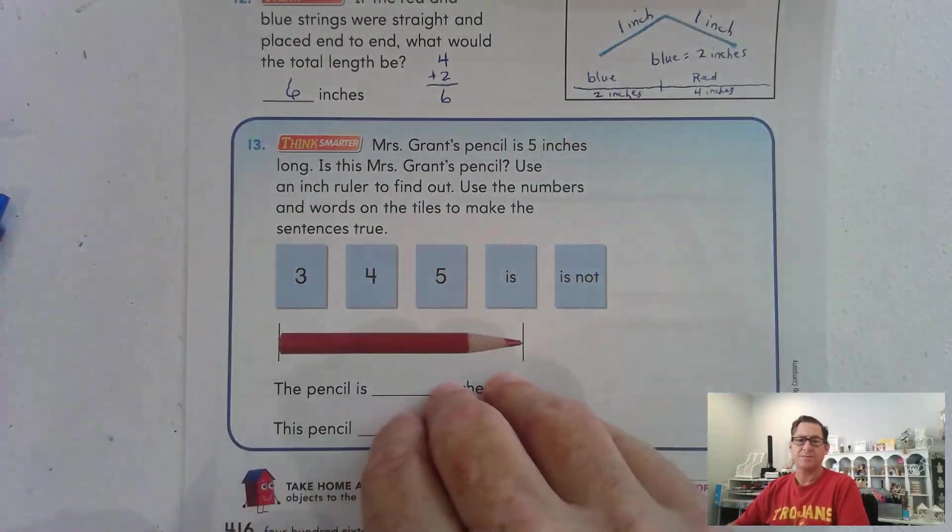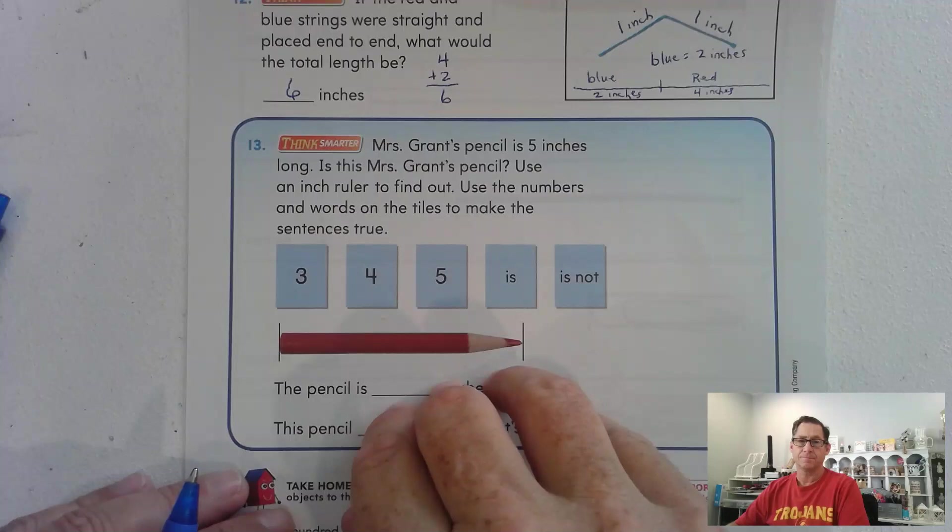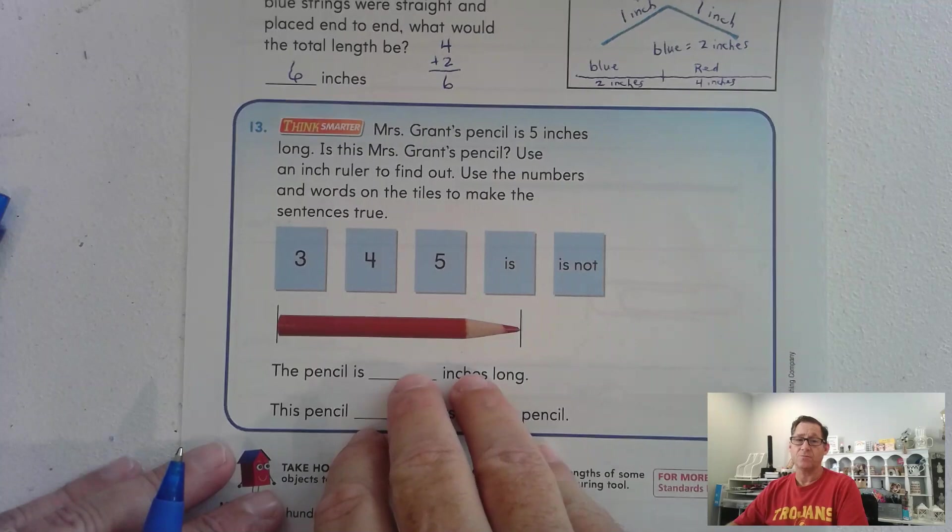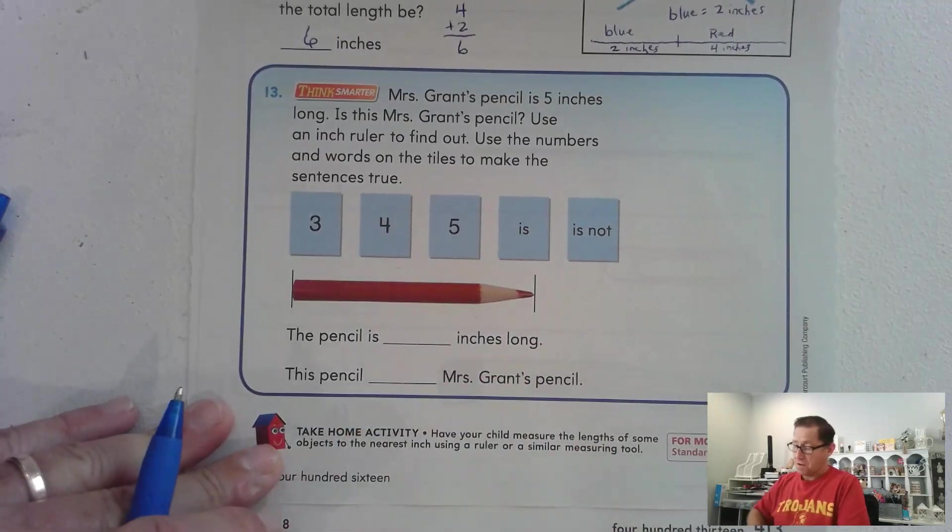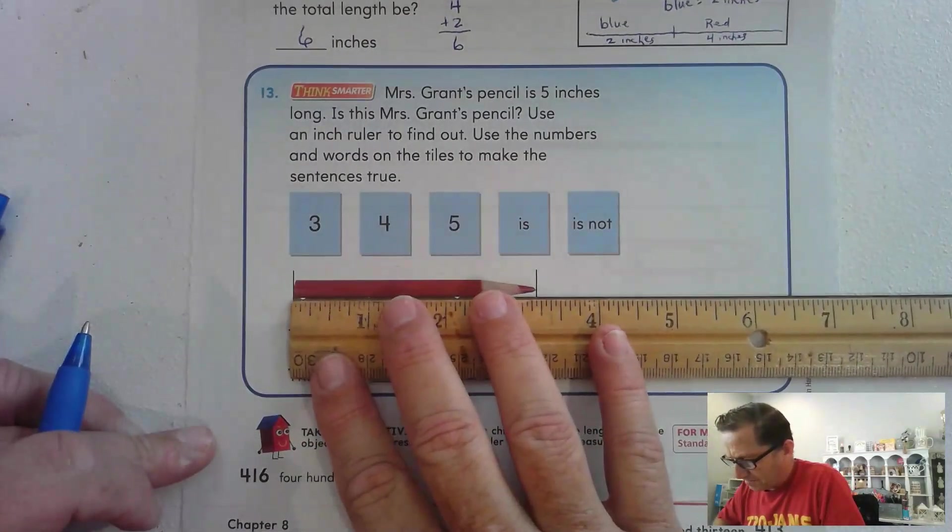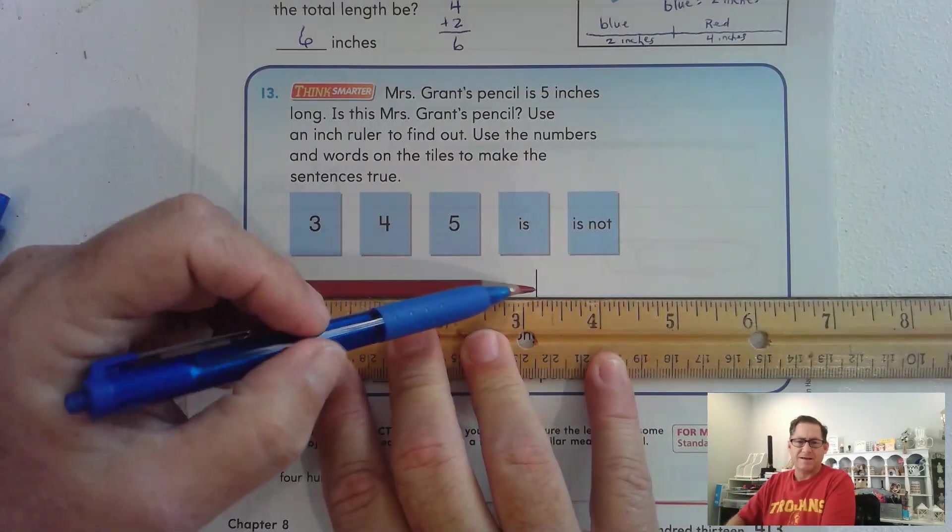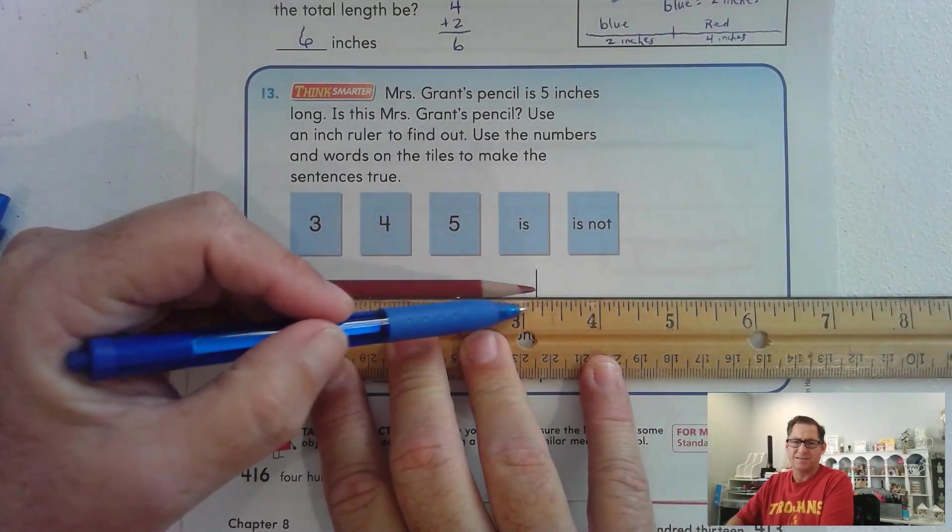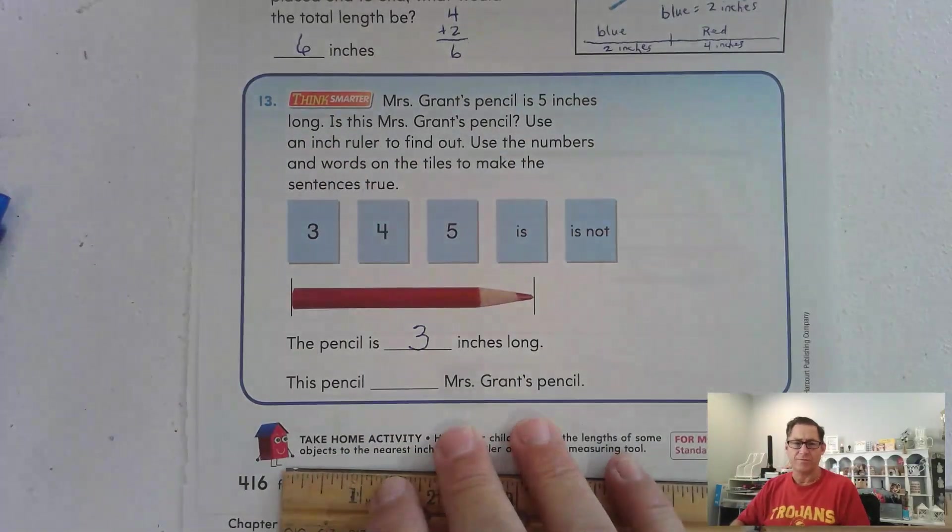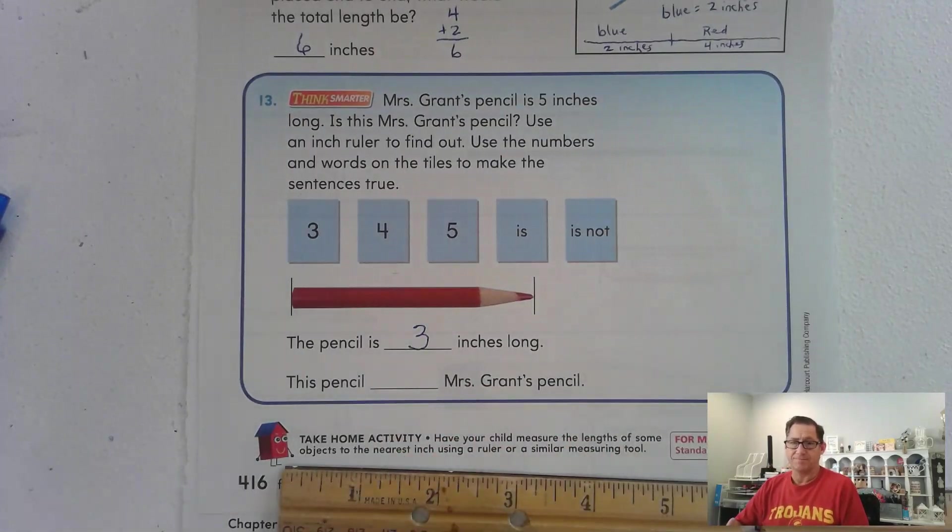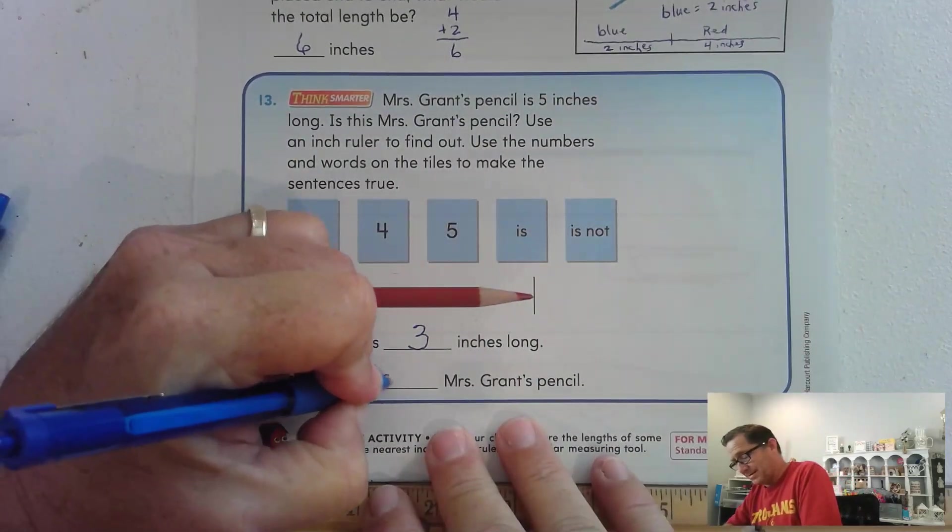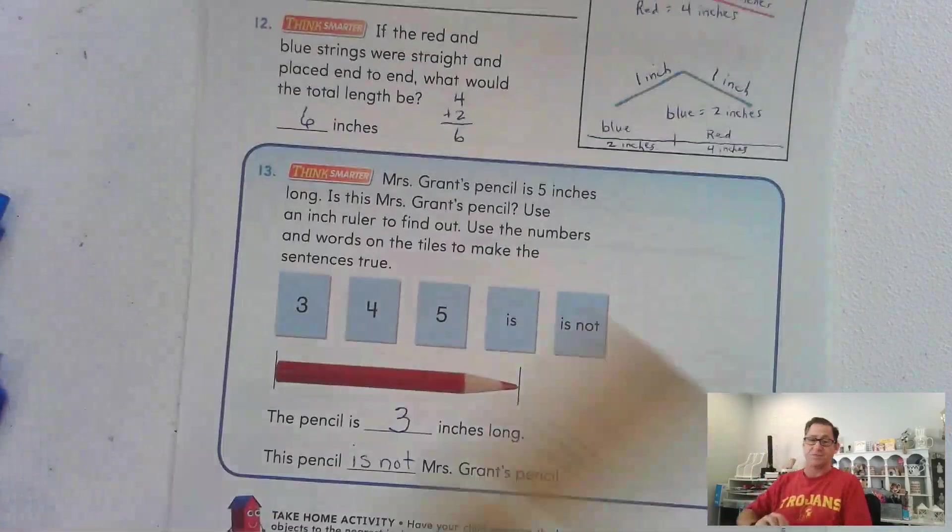And 13. Mrs. Grant's pencil is five inches long. Is this Mrs. Grant's pencil? Use an inch ruler to find out. Use the numbers and words on the tiles to make the sentences true. It doesn't look like five inches to me, but let's just check. Yeah, no, it's not five, right? It's close to three inches. So the pencil is, we're going to say three inches long. It's a little over three inches. This pencil is or isn't. Mrs. Grant's was five inches. This one's three inches. So this pencil is not Mrs. Grant's pencil.